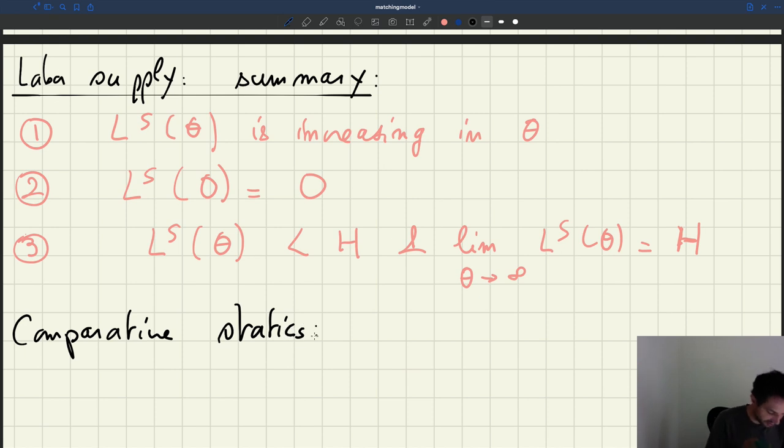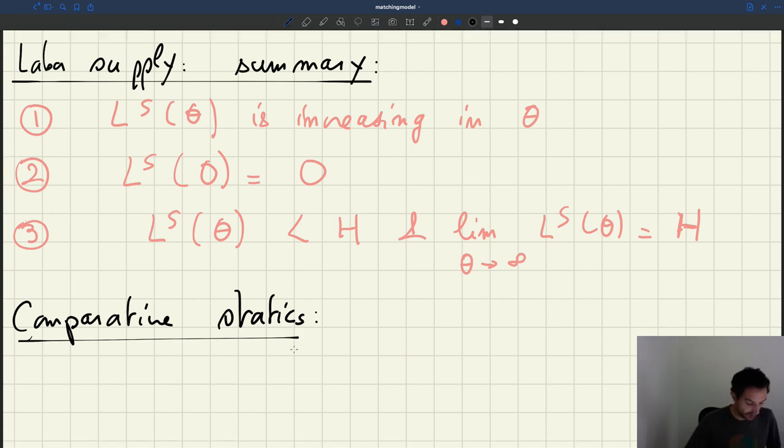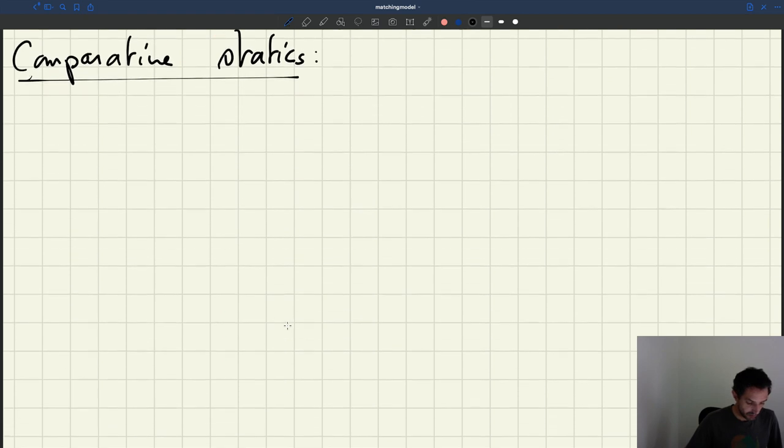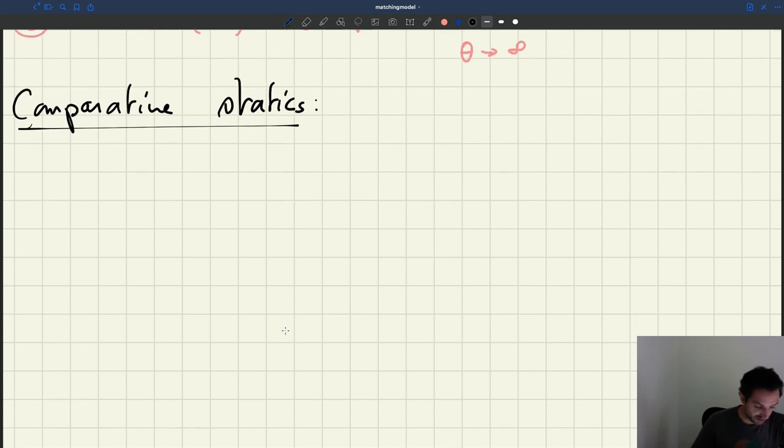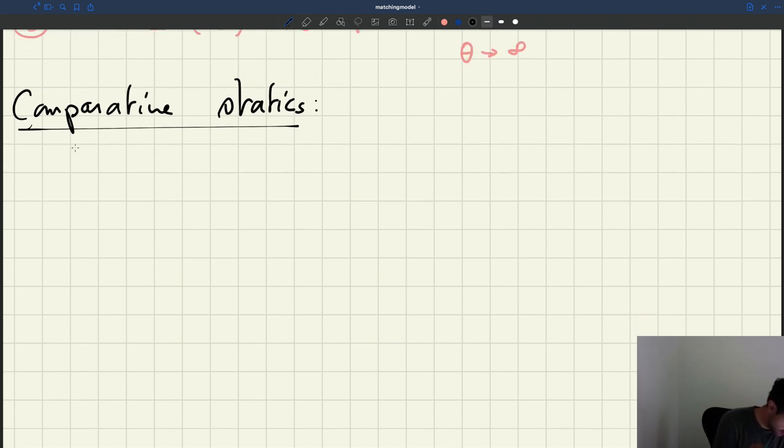So what are the parameters that are involved here? One parameter that's involved is the job separation rate. So you remember that the labor supply that we just derived is f of theta divided by s plus f of theta times h.